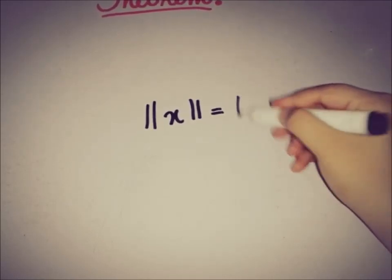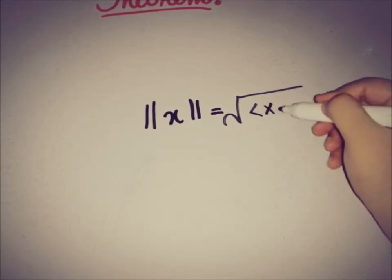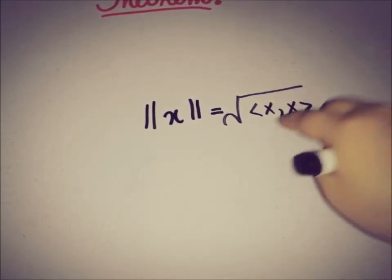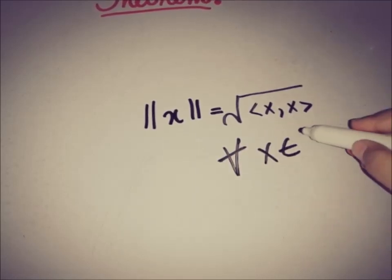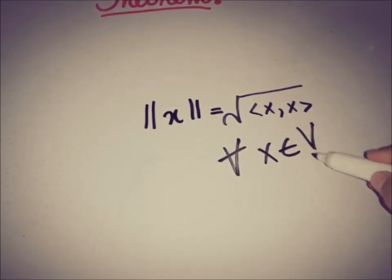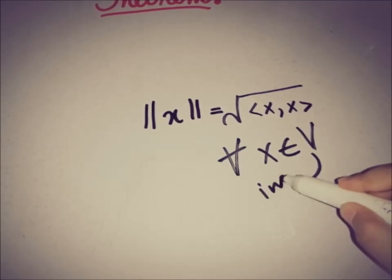Hello everyone, this is DA from eAcademy. Today this video is about the relation between the inner product space and the norm space, or the Banach space and the Hilbert space. In a previous video, I used the relation that the norm of x is equal to the inner product of that element with itself, where x is taken from an inner product space.